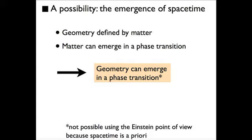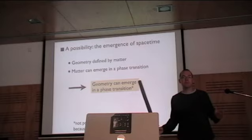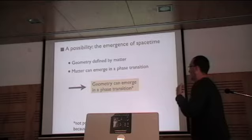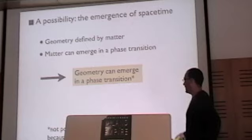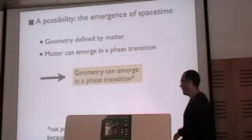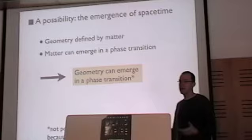The second point I want to make is an application to cosmology. The point is this: if geometry is defined by matter and matter can emerge in something like a true phase transition - think of a spin model or something like that and the excitations emerging in some phase transition - then what follows if you put these two things together is that geometry can emerge in a phase transition. This is not possible in the Einstein point of view, because just to formulate what matter is, you need to have the space-time for that. That's where it sits on.